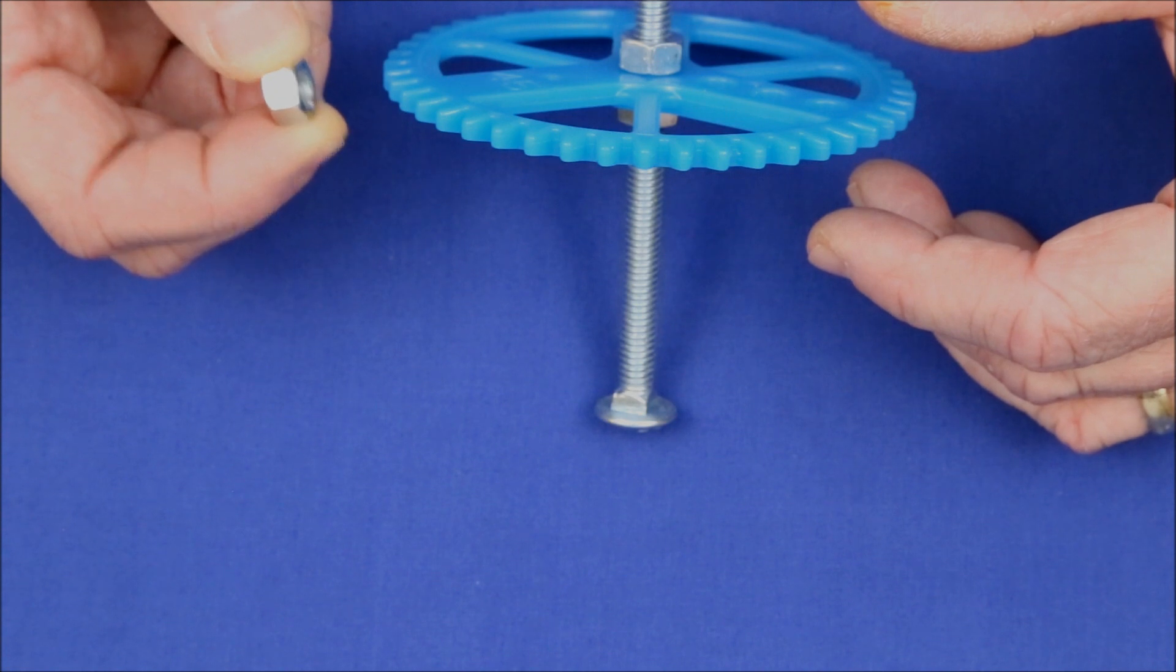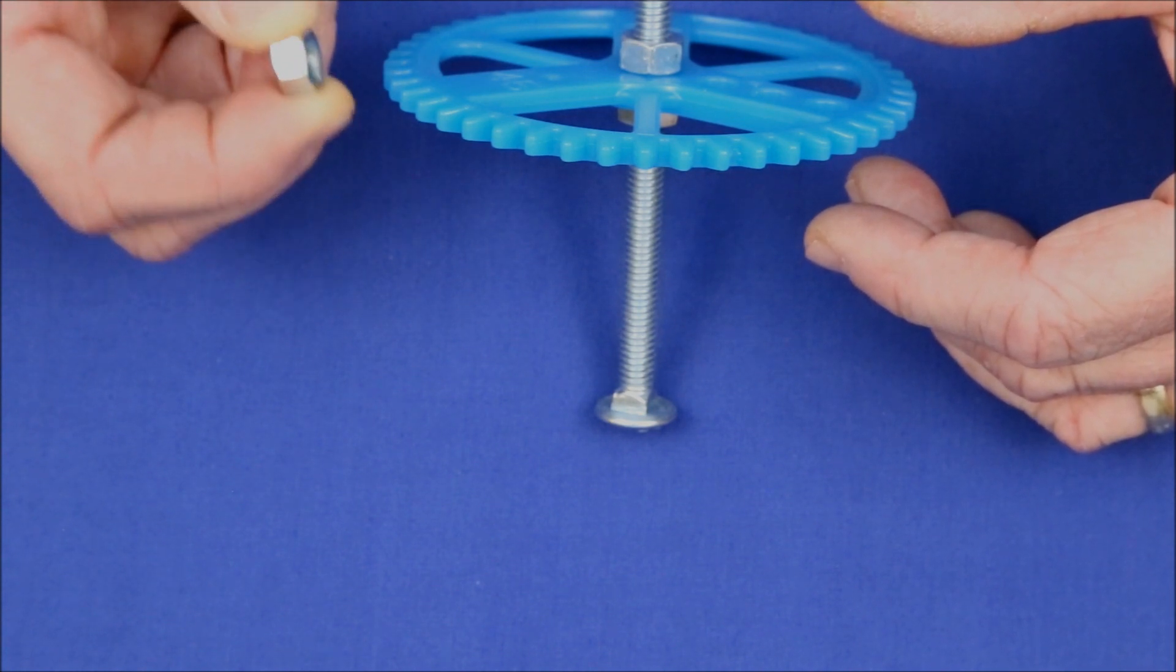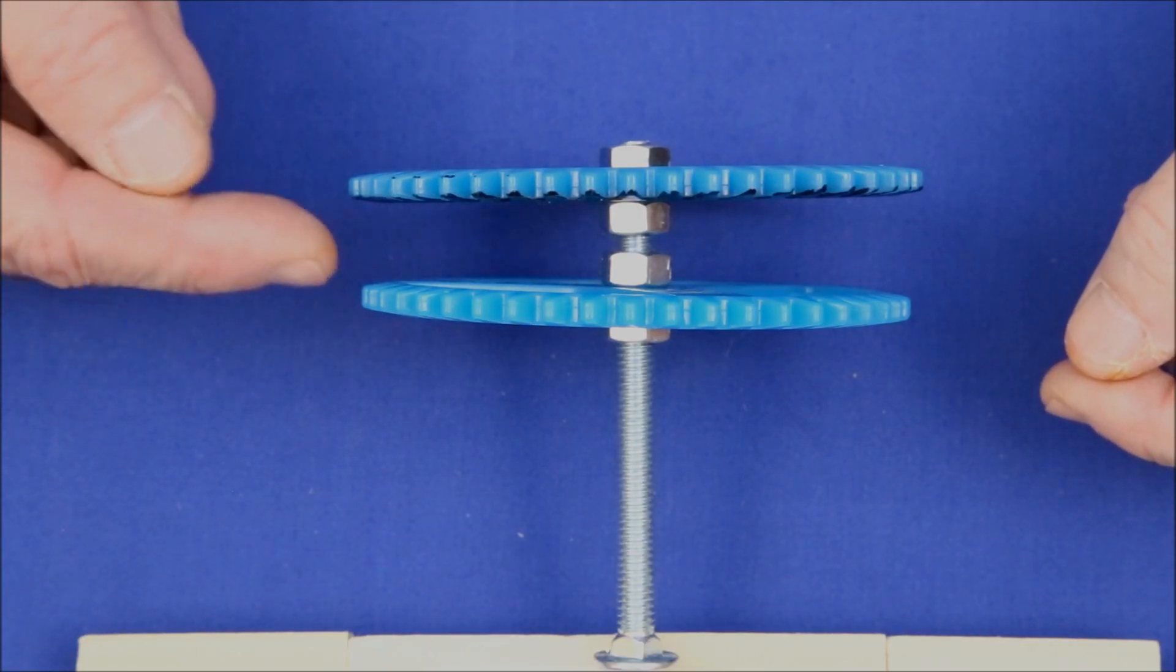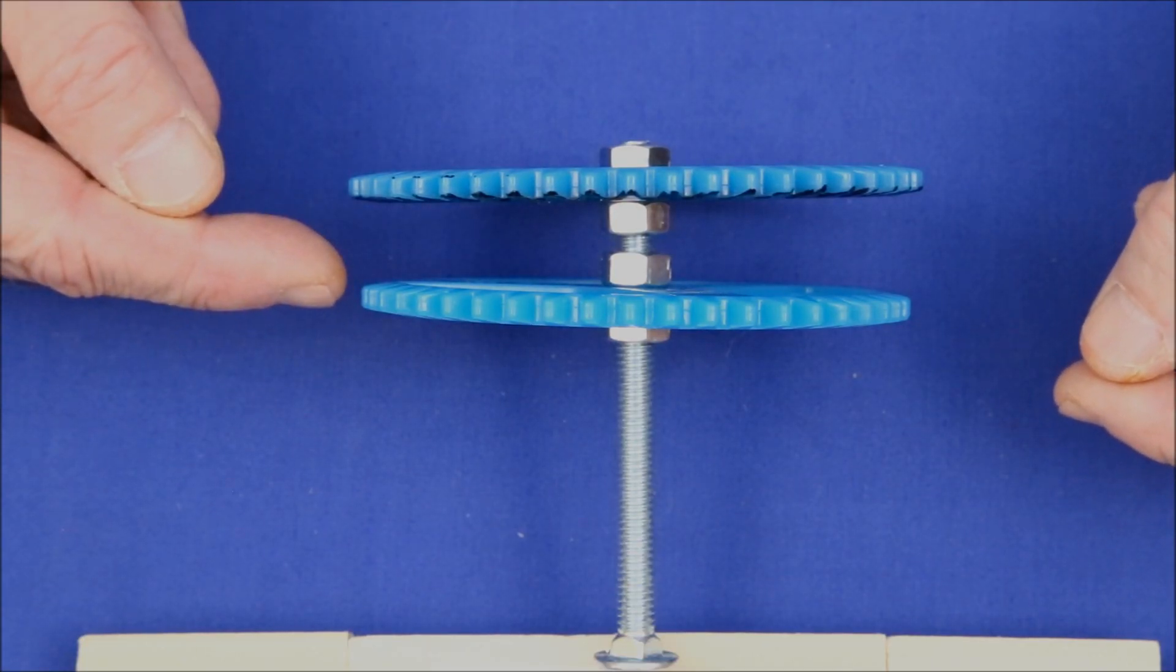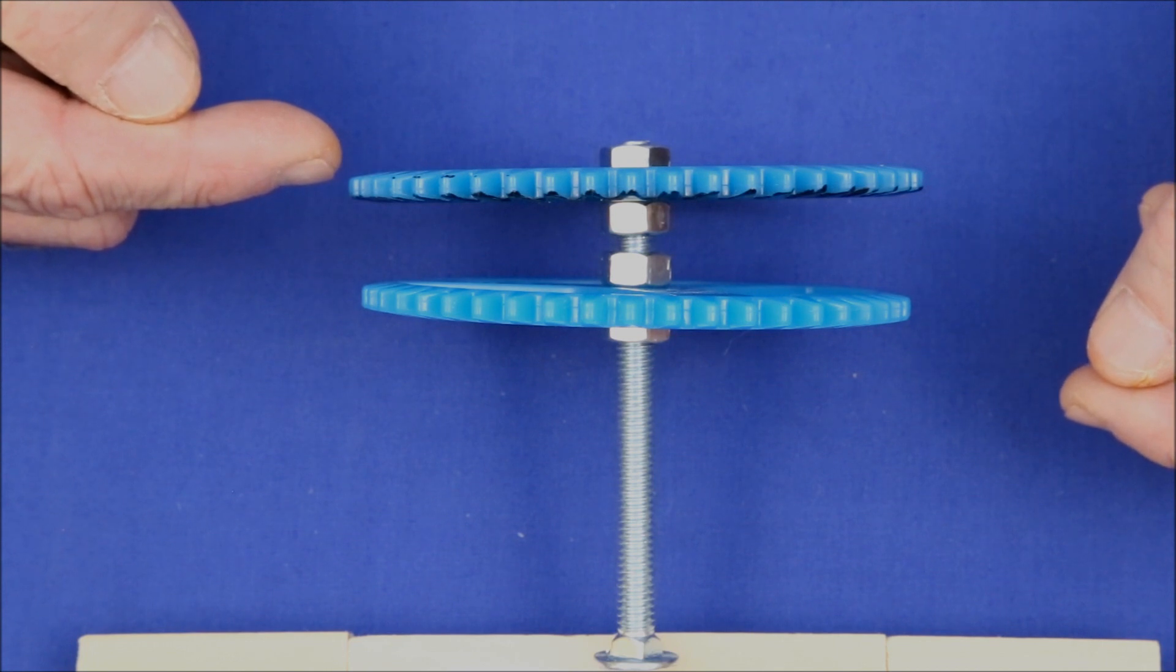The result is that these nuts thread on the bolts at an angle of as much as 10 degrees. You can see the difference here. The bottom gear is true, whereas the upper one, held with the crooked nuts, is at a definite angle to the bottom one.